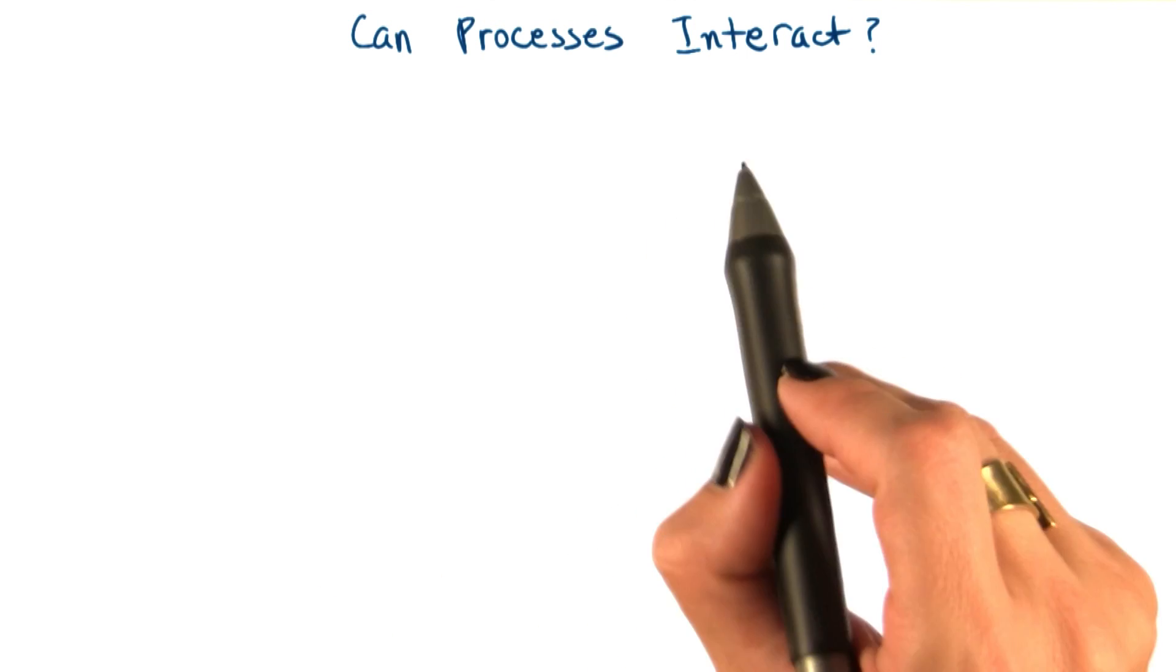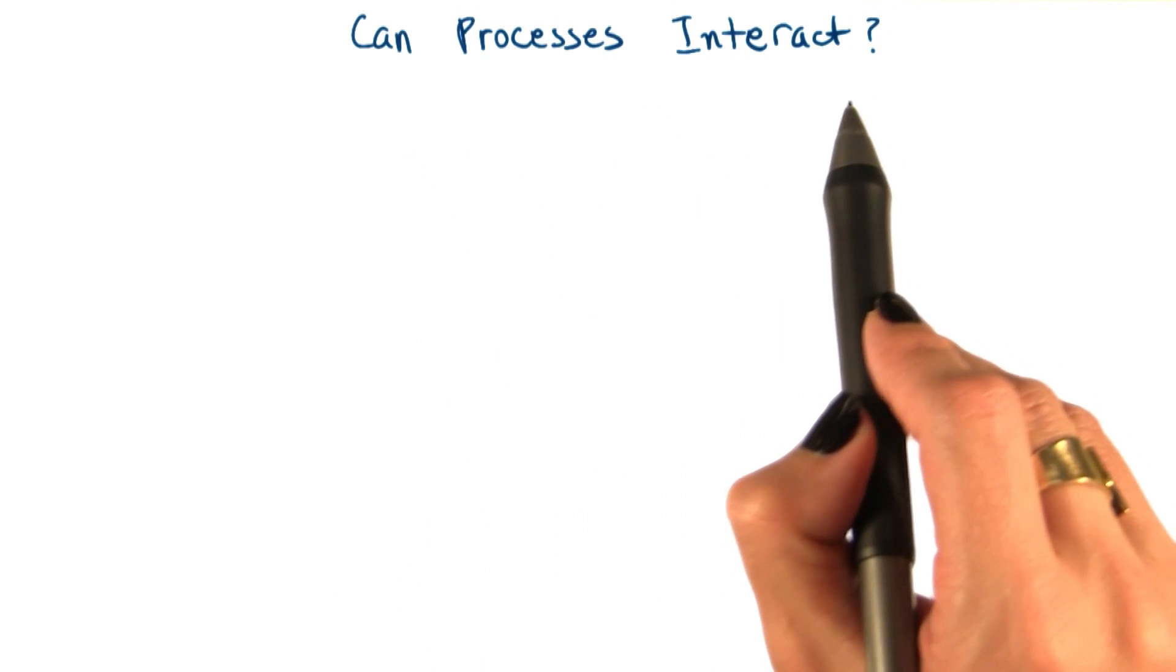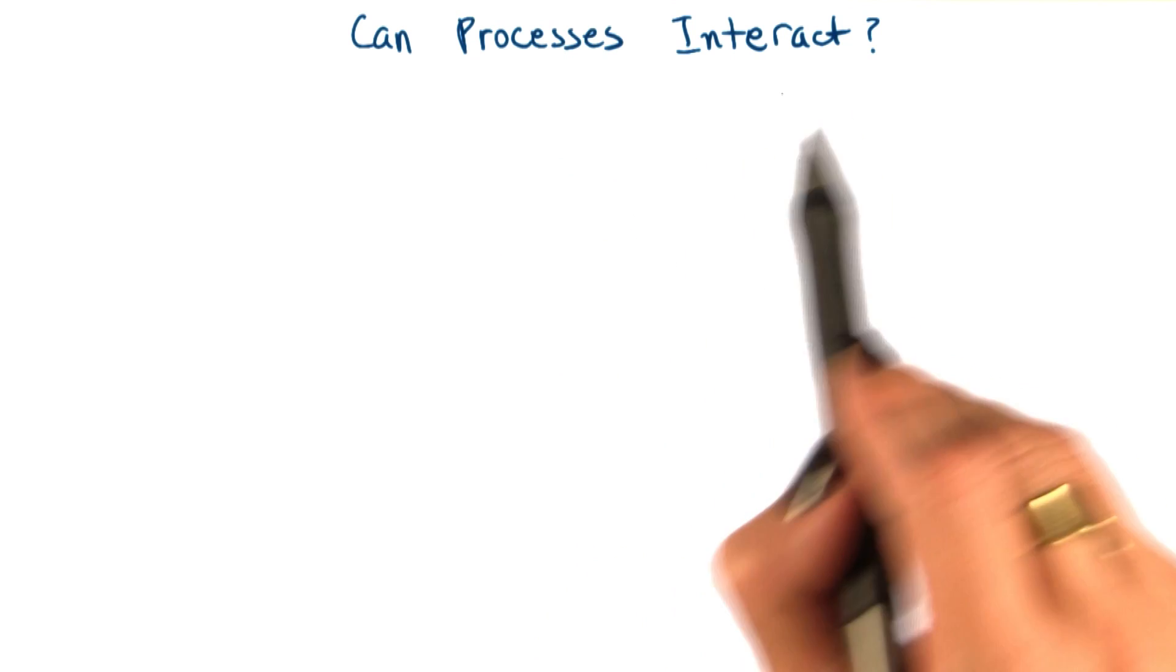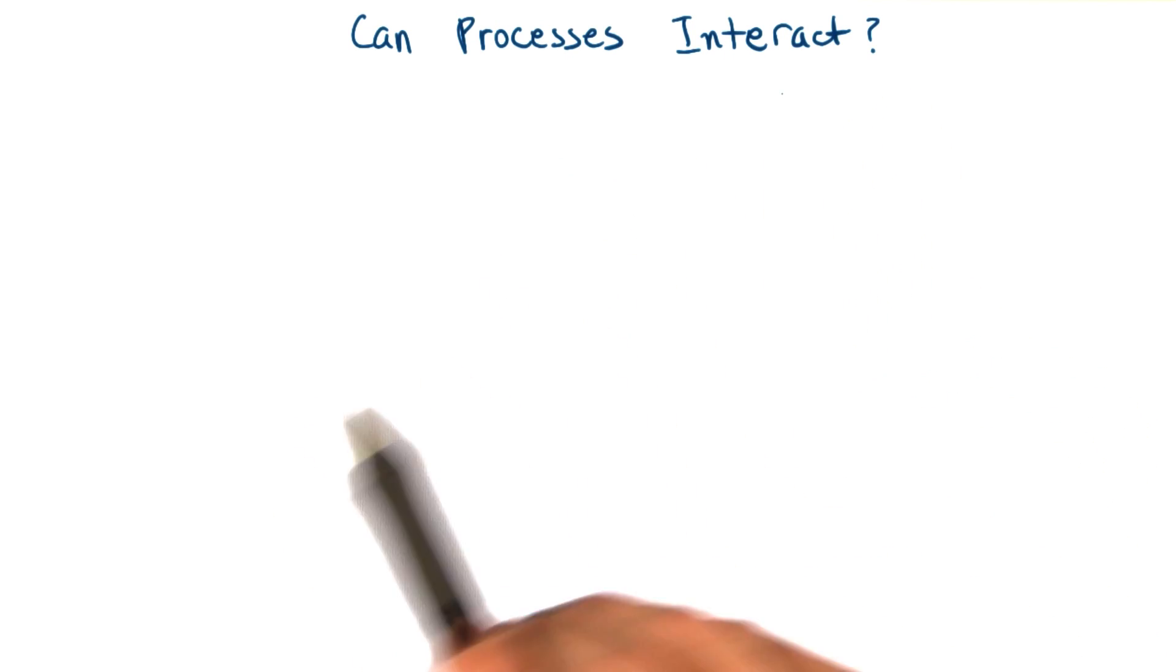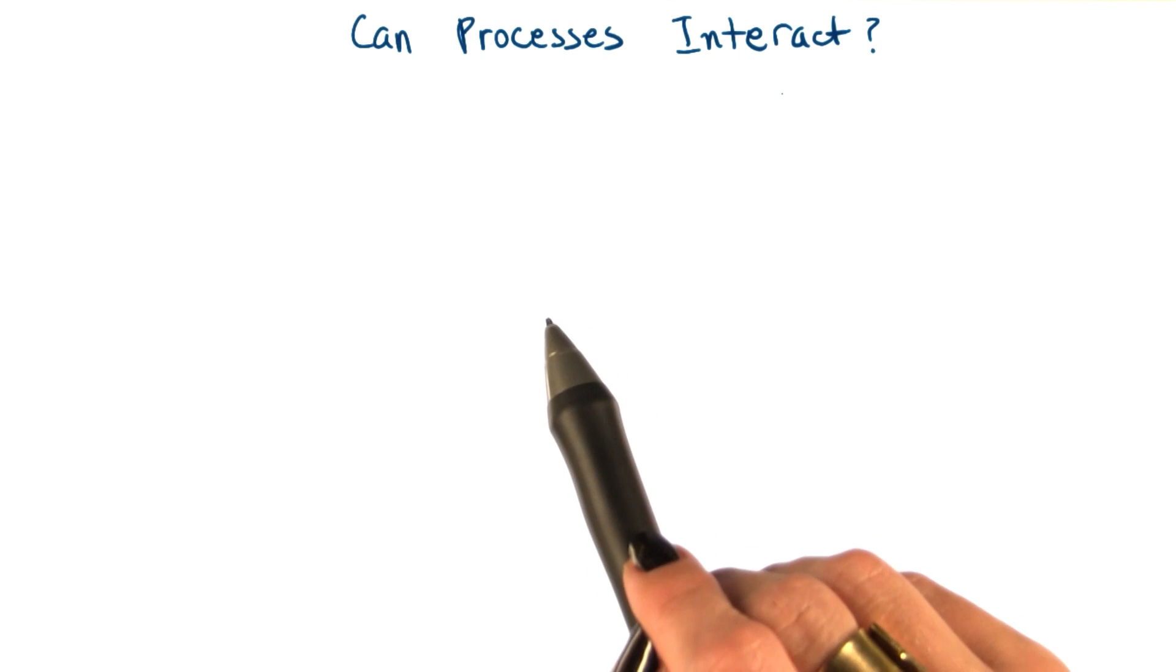Another natural question can be, can processes interact? And the simple answer to this is yes. An operating system must provide mechanisms to allow processes to interact with one another.